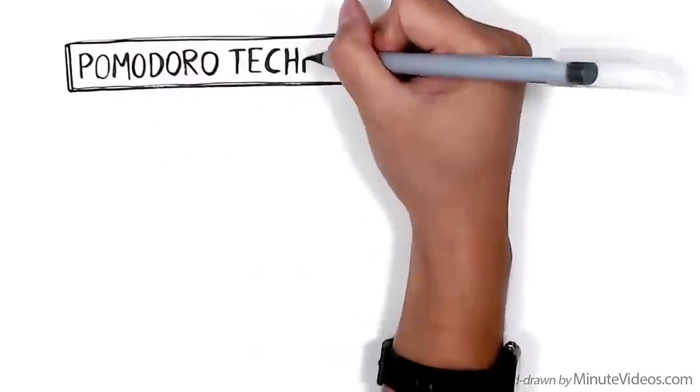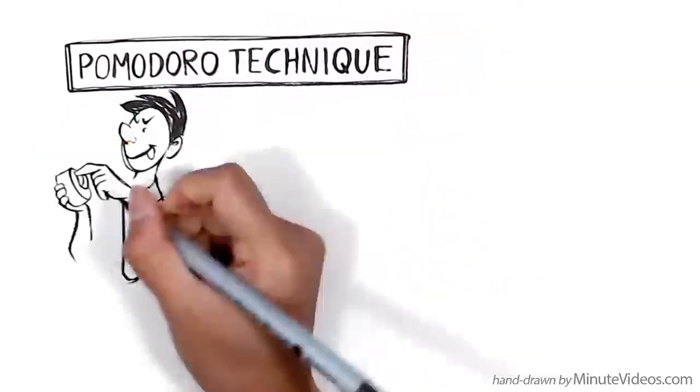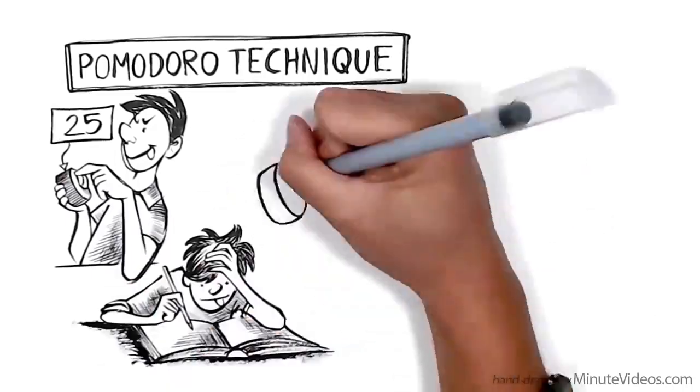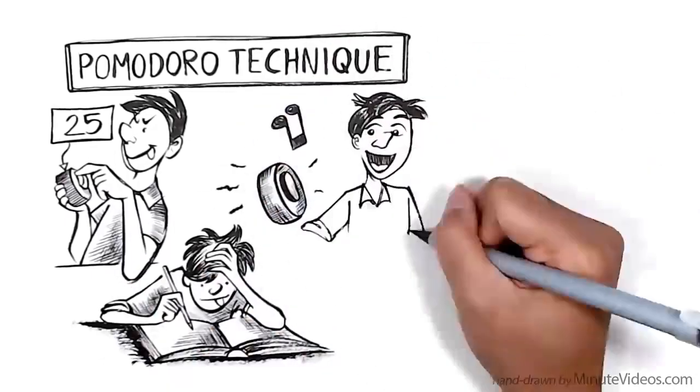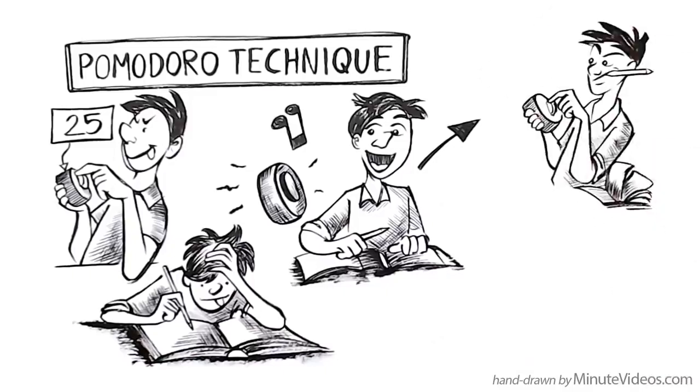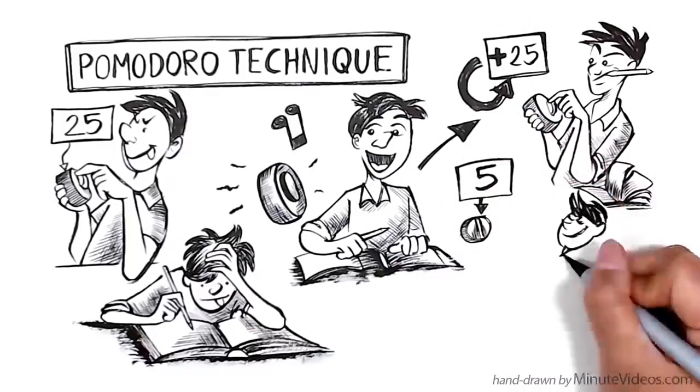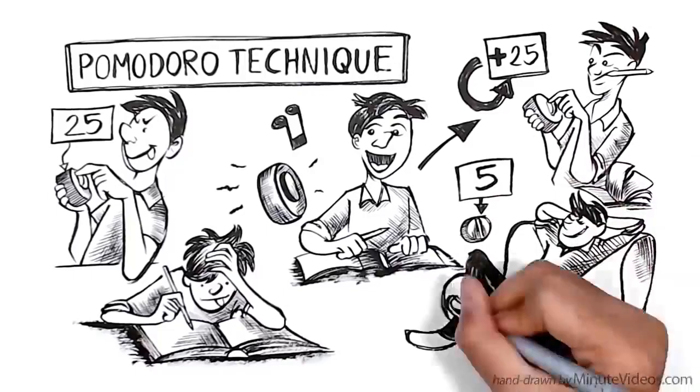Pomodoro Technique: Set a timer to 25 minutes when you focus entirely on your studies. When the timer rings, relax for 5 minutes. If you want to continue, just set the timer again. The small breaks in between are relaxing and motivating to keep going.